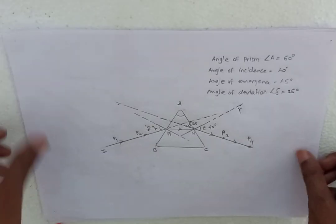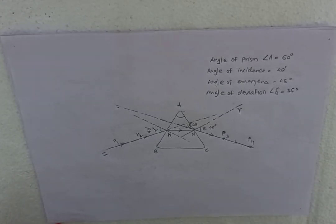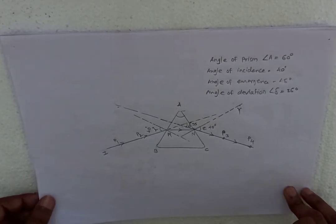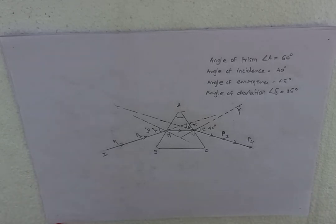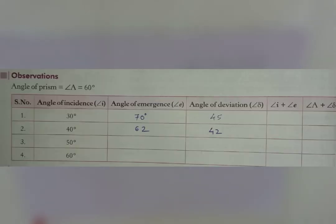Measure angle of emergence. In this way we measure the angle of prism, which is 60 degrees. Angle of incidence 40 degrees, angle of emergence 45 degrees, and angle of deviation 42 degrees. When we take angle of incidence 30 degrees, we get angle of emergence 70 degrees. When we take angle of incidence 40 degrees, we get angle of emergence 62 degrees. Repeat the same steps for taking angle of incidence 50 degrees.